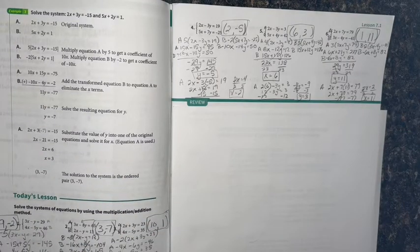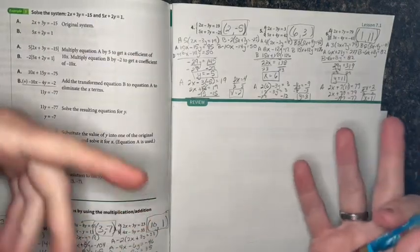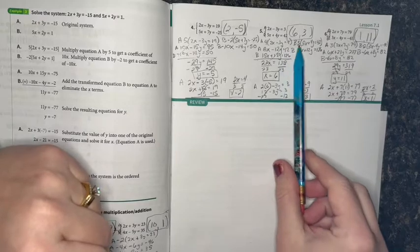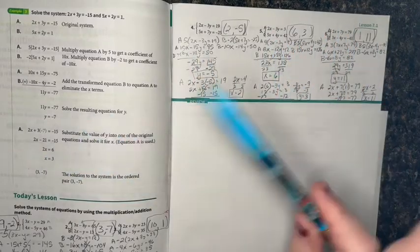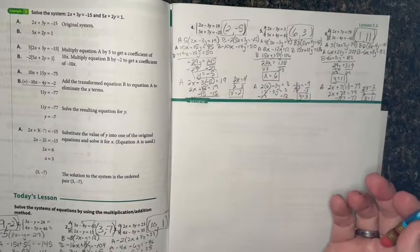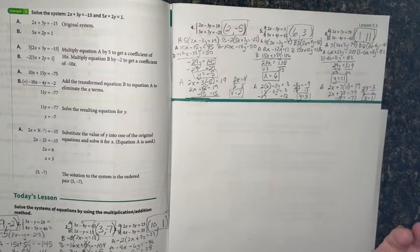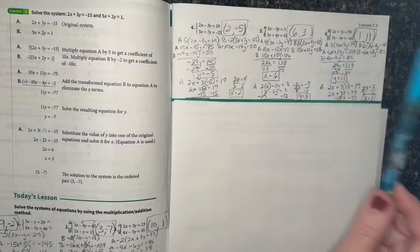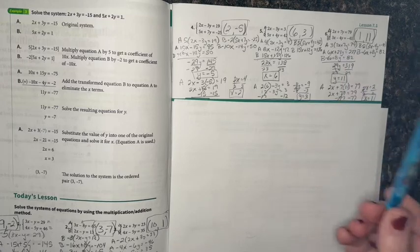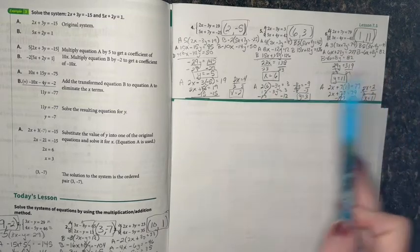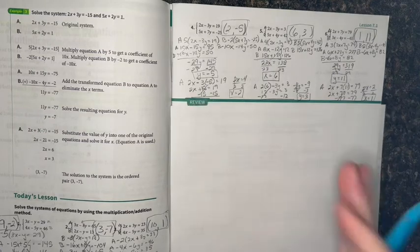Each of these problems we did slightly differently. Some of them we had to multiply just one equation to get it to match but opposite the other. Some of them we had to multiply both. The choice we make is which one to multiply — it doesn't matter which one you choose. No matter which one you pick, as long as you watch your math, you should end up with the same answer. That's lesson 1.